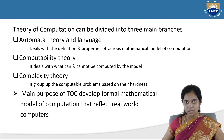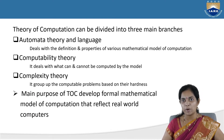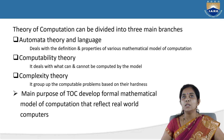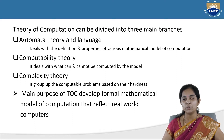This theory of computation can be divided into three main branches. The first one is automata theory and language, the second is computability theory, and the third is complexity theory.